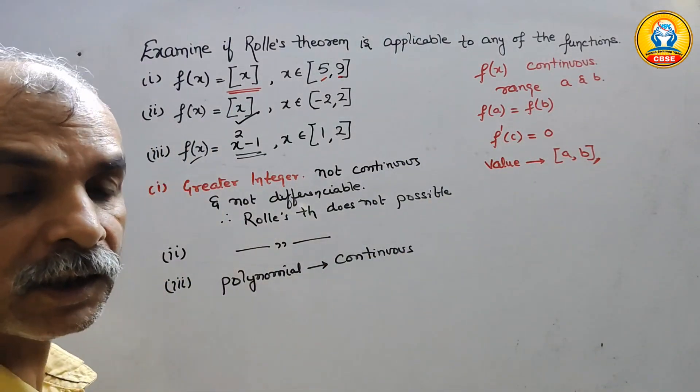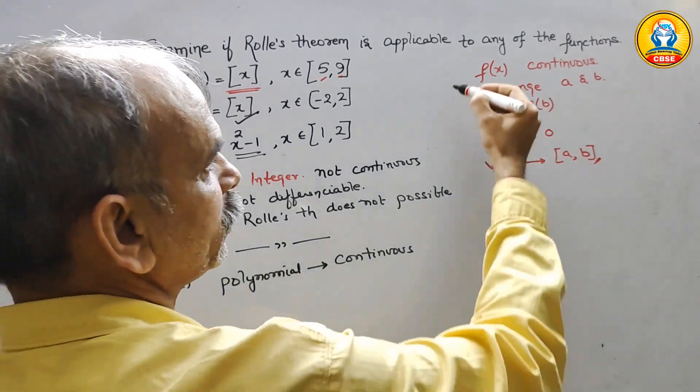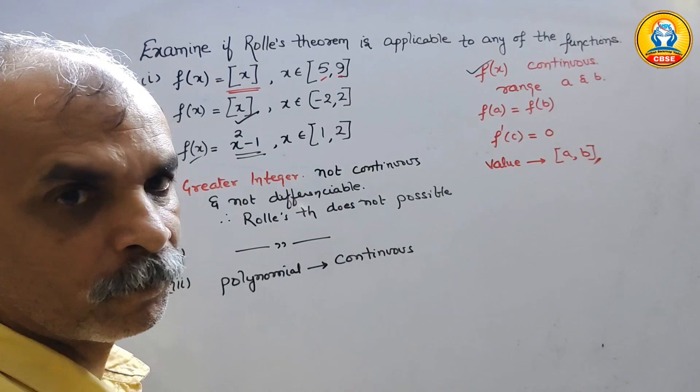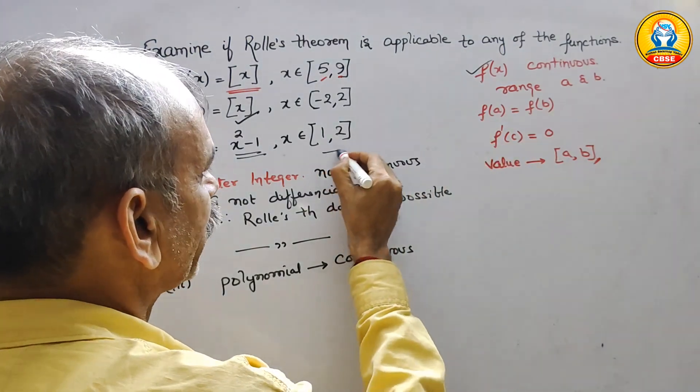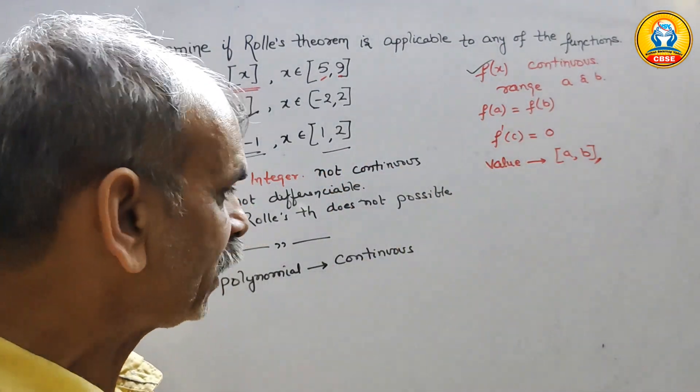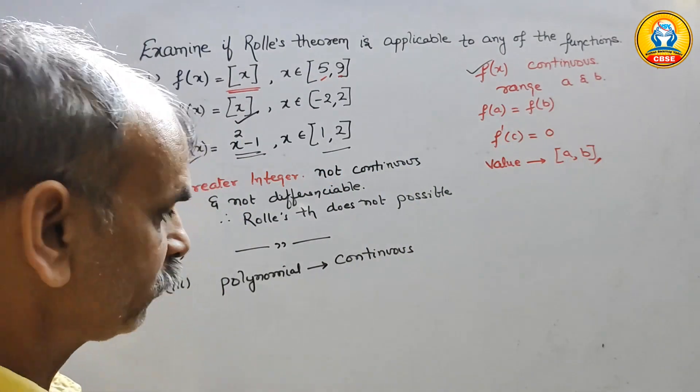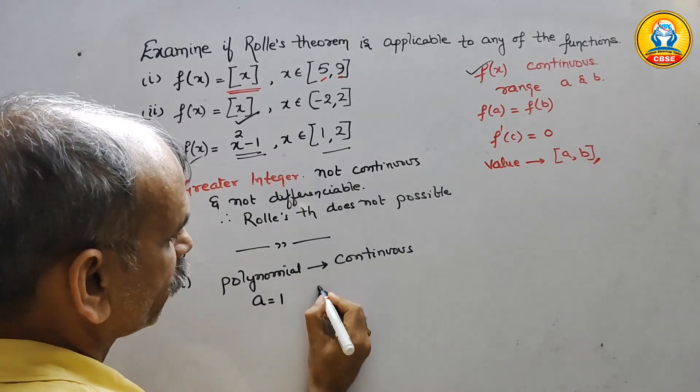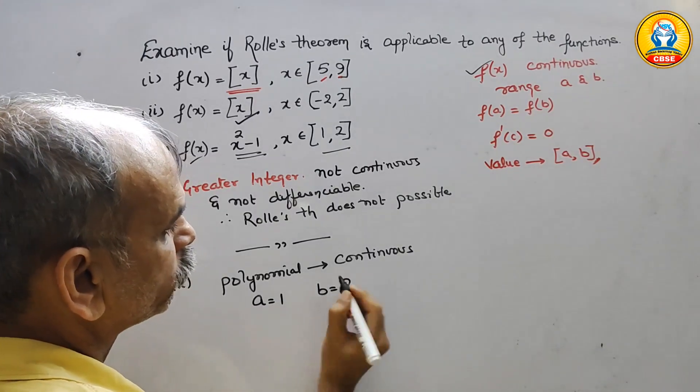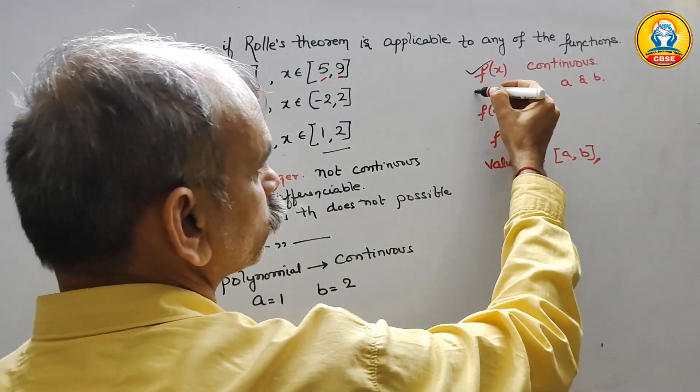Polynomial is continuous. Now, this is gone. Range is 1 and 2. Now we can say A is equal to 1 and B is equal to 2. This also over.